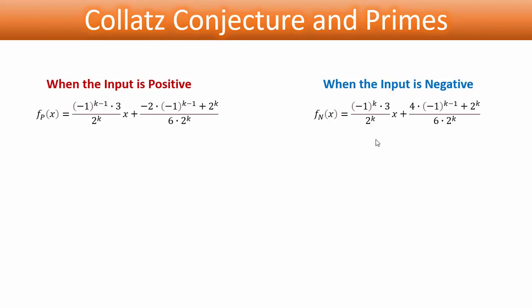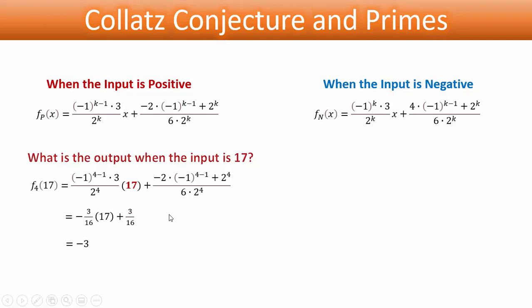Now, we'll take a look at an example. Let's say we choose x equals 17. What will be the output when x is 17? What we will do is to plug 17 into the equation, and we will need to select the value of k that will give us an integer output. These are diophantine equations, so we are seeking integer outputs. If we do that, the value of k—